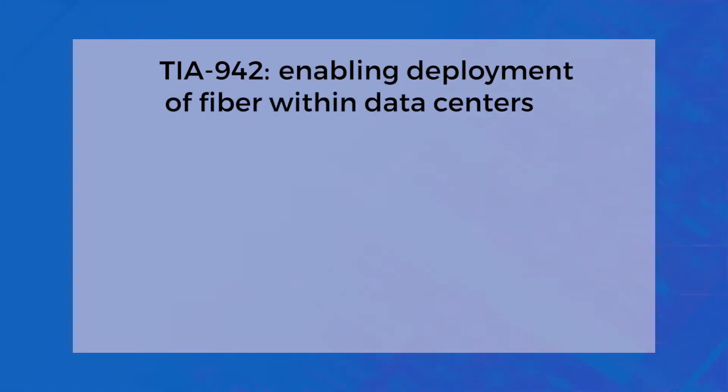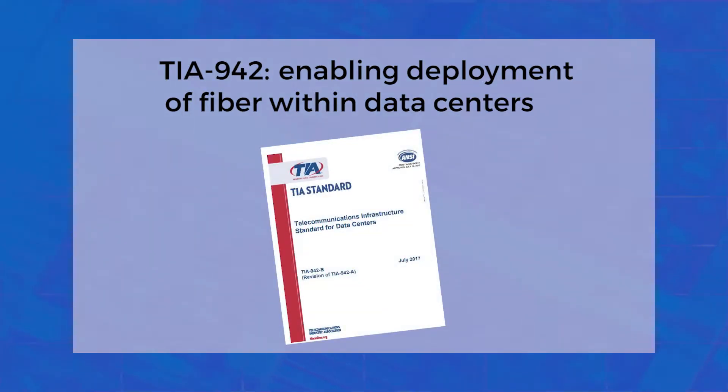To achieve and maintain this growth, fiber cabling had to be standardized within data centers. That standard, TIA-942, which enables deployment of fiber in data centers, has recently been updated with the release of TIA-942B. Joining me today via Skype to talk about the importance of these standards is Jonathan Ju, President of J&M Consultants and Secretary of TIA's TR42 Cabling Systems Engineering Committee.